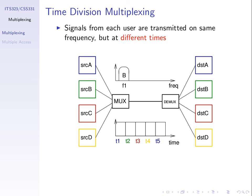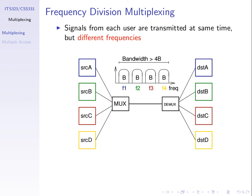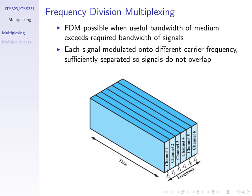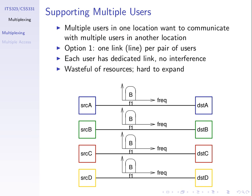That's multiplexing: use one link to support data from multiple users, either by transmitting their signals at different frequencies (FDM) or at different times (TDM). This allows data from multiple users to be transported across one link. The alternative approach — giving users a separate physical link — is sometimes referred to as space division multiplexing, but it's not common because it's very expensive.